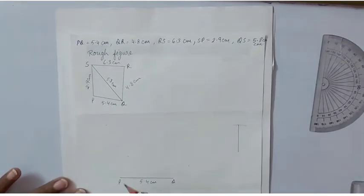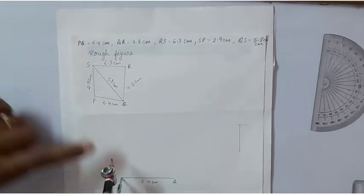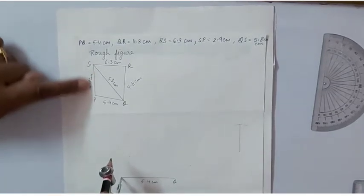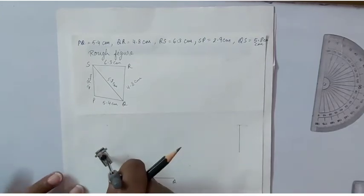And keep the compasses on point P because we have to draw PS. So we will cut an arc for PS from center P.